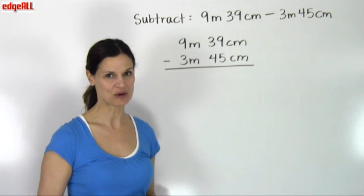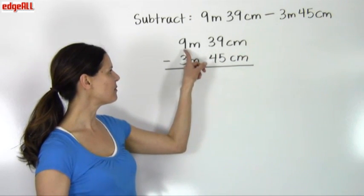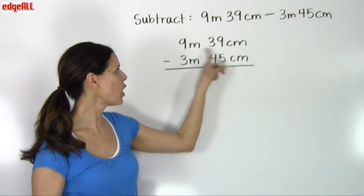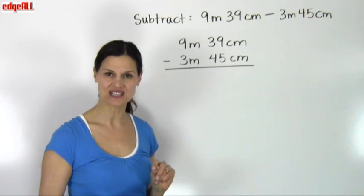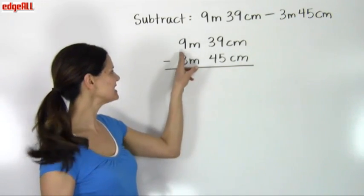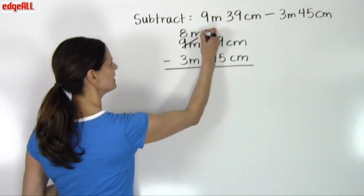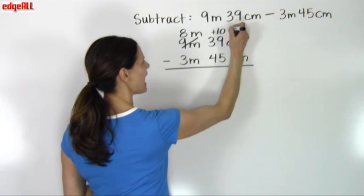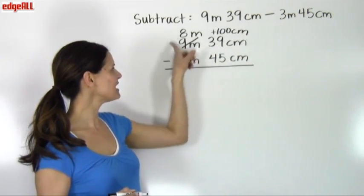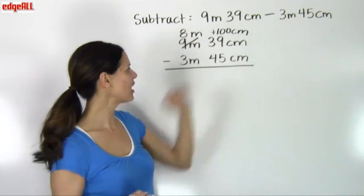I can't subtract 45 from 39, so what I need to do is borrow from the bigger unit on the left. A meter is larger than a centimeter, and one meter equals 100 centimeters. So if I borrow one meter from the 9 meters, I make it 8 meters, and then I add 100 centimeters to the 39 centimeters, because I borrowed one meter which equals 100 centimeters.